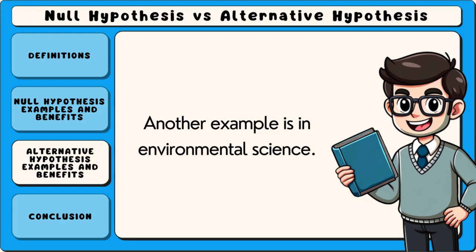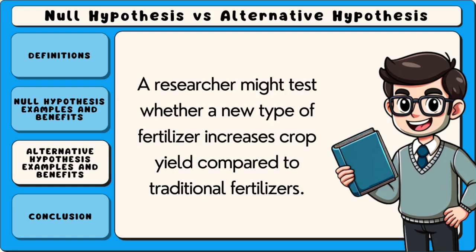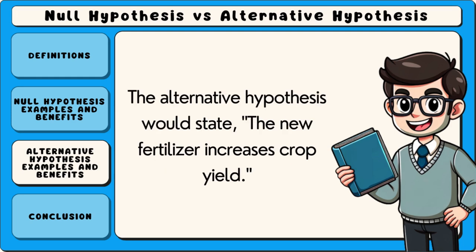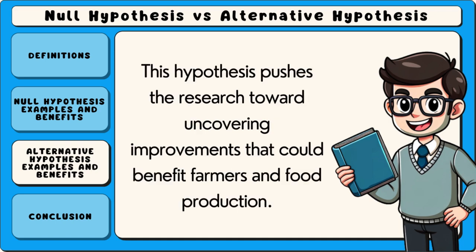Another example is in environmental science. A researcher might test whether a new type of fertiliser increases crop yield compared to traditional fertilisers. The alternative hypothesis would state that the new fertiliser increases crop yield. This hypothesis pushes the research toward uncovering improvements that could benefit farmers and food production.